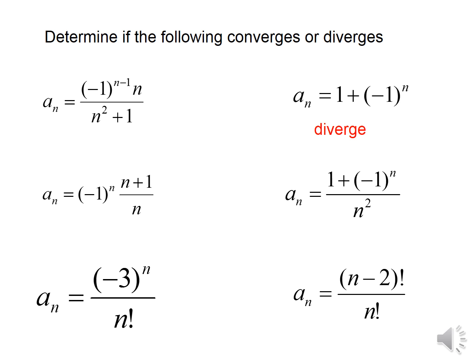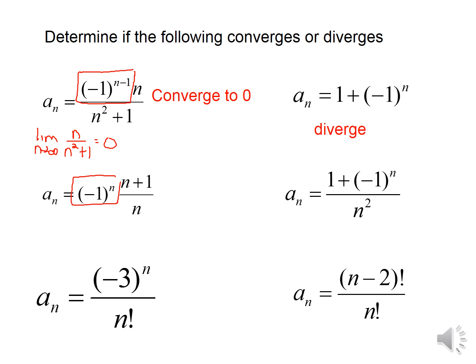Let's look at a couple of examples. In the first, the (−1)^n term causes alternation, so we examine the limit as n approaches infinity of n over (n² + 1). By dominance of the lead term, this limit is zero, so the sequence converges to zero. In the second example, the limit as n approaches infinity of (n+1)/n is 1, and because it alternates it would bounce back and forth between −1 and 1, so the sequence diverges.